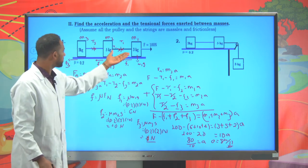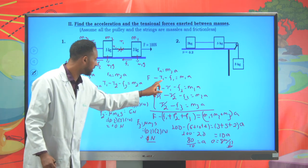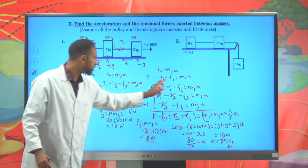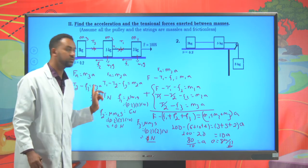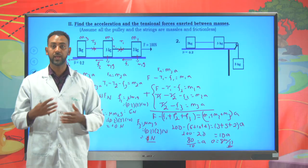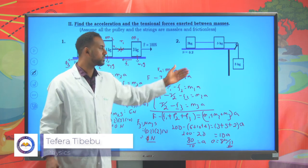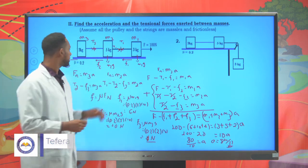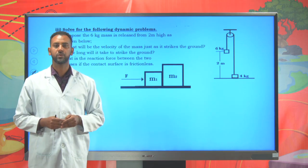It is also possible to find tensions T1 and T2 by substituting the known acceleration back into the individual equations. For example, using the equation for M1 allows you to find T1, and using the equation for M3 allows you to find T2. This is how we apply the law of dynamics to solve such problems. Students, please try to find the acceleration of this system on your own. That's all for today — we'll look at different problems and proceed to other topics next time. Bye-bye for today.